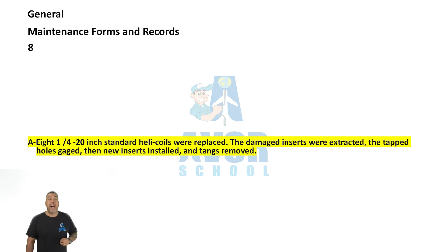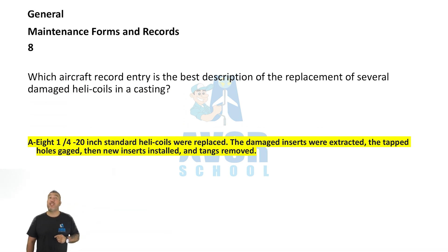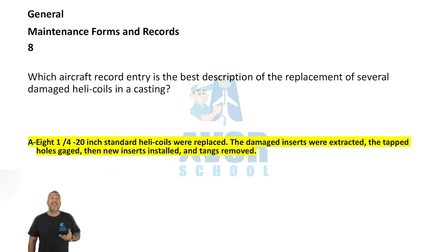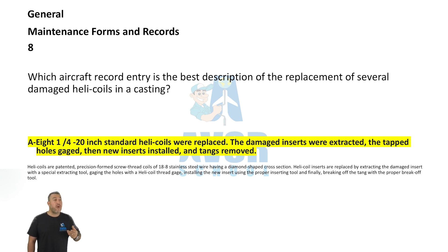Number eight: Which aircraft record is the best description of the replacement of several damaged helicoils in a casting? The answer is: 'An 8-1/4 20-inch standard helicoils were replaced. The damaged inserts were extracted, the tapped holes gauged, and the new inserts installed and tangs removed.'